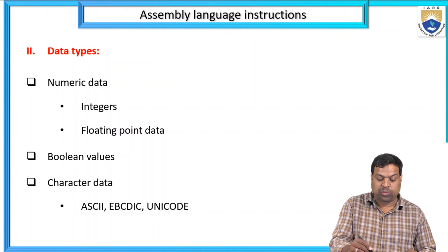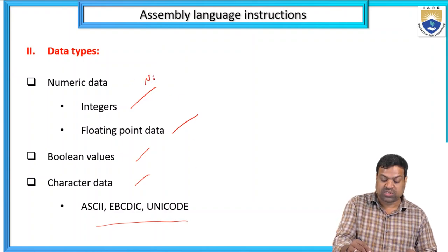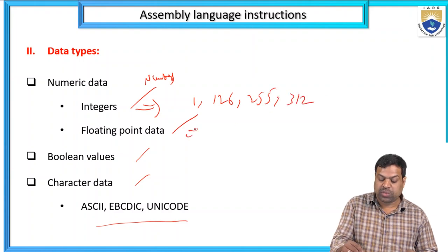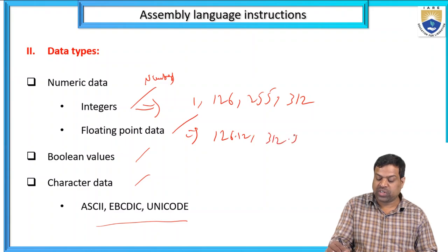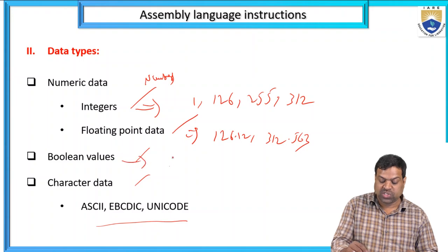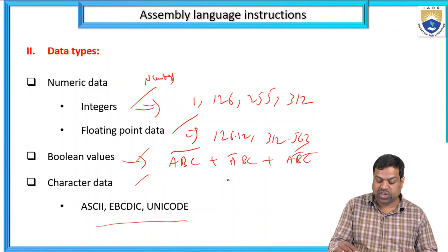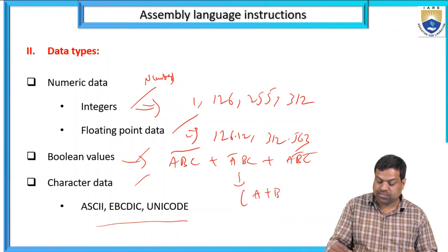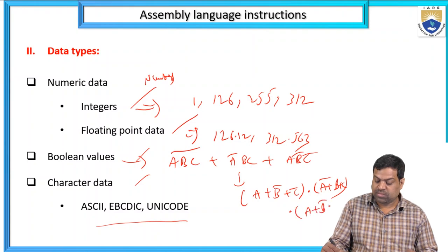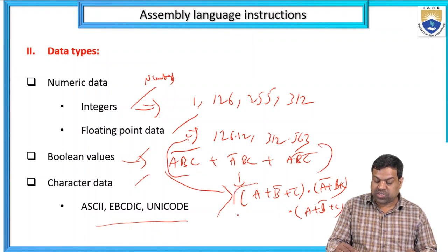Data types: numeric data — integer (e.g., 1, 126, 240, 255, 312) and floating point (e.g., 126.12, 312.56); boolean values — expressions like ABC-bar + A-bar·BC + A·B-bar·C-bar; and character data — ASCII, Unicode, etc.